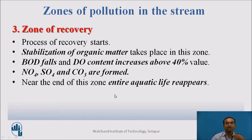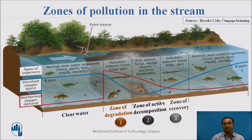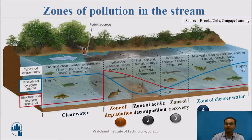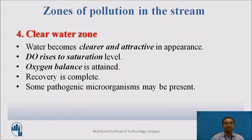The last zone is the Zone of Clearer Water — the same water condition present before the addition of wastewater. DO is again at 8 ppm and BOD is back to the lowest level seen before wastewater was added. Properties include clear and attractive appearance, DO at saturation level, oxygen balance restored, recovery fully complete with no remaining organisms. Some pathogenic microorganisms may be present in industrial areas, but not in streams near domestic areas.